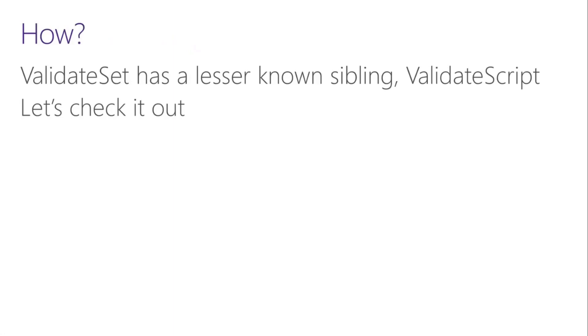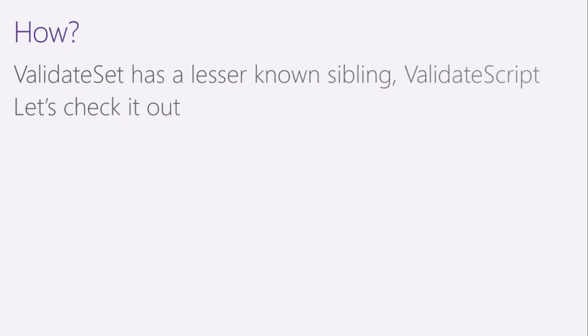The way I got around this was a thing called ValidateScript, which is a lesser-known sibling or cousin to ValidateSet. Instead of having a static set of values, you can put a script and any magic behind that. I've got about 15 minutes worth of demos and eight minutes to do them in, so let's jump right into that.